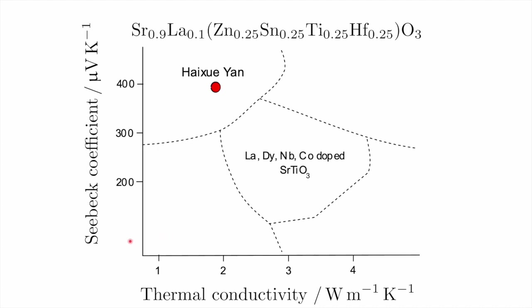Here I'm plotting the Seebeck coefficient in microvolts per kelvin versus thermal conductivity. We really want to be in the regime where we have a large Seebeck coefficient, because the performance of the thermoelectric battery depends on the square of the Seebeck coefficient, divided by the thermal conductivity, since we want to maintain a large temperature gradient across the thermoelectric material.